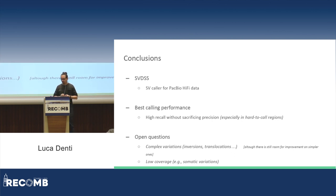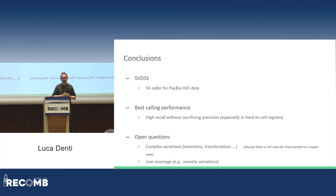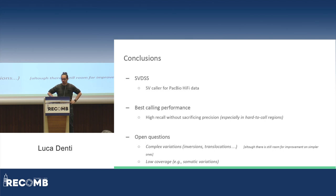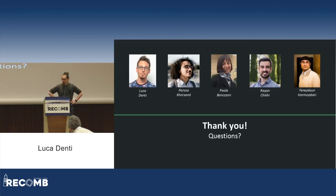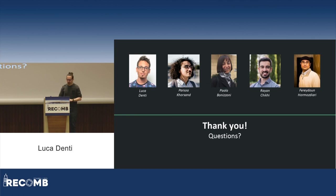To conclude, SVDSS is a specific caller for PacBio hi-fi reads that shows the best calling performance especially in hard-to-call regions of the genome, achieving higher recall without sacrificing precision. There are still open questions, like whether we can extend this framework to complex variations like inversions and translocations. Even for insertions and deletions, there is still a lot to do to improve calling accuracy. We are also interested in improving performance on low-coverage samples. Thanks to my collaborators and thank you for your attention.